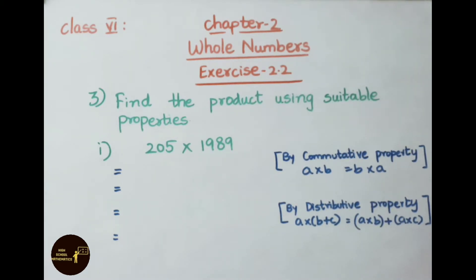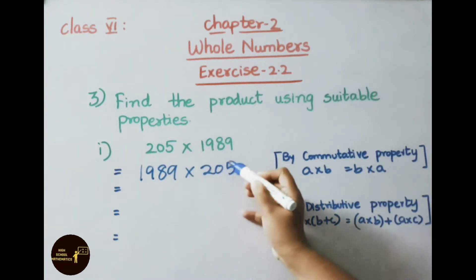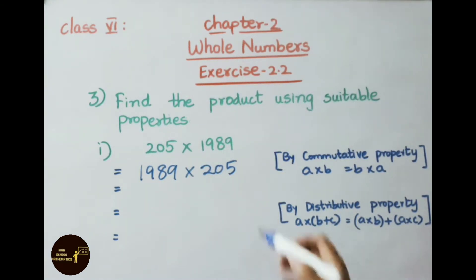We shall apply commutative property for these two numbers. That is, a into b can be written as b into a. Write down 1989 multiplied by 205. Now 205 can be written as 200 plus 5. Write down 1989 into 200 plus 5.